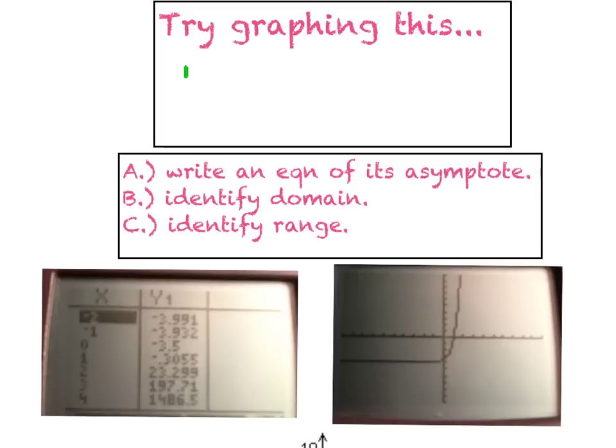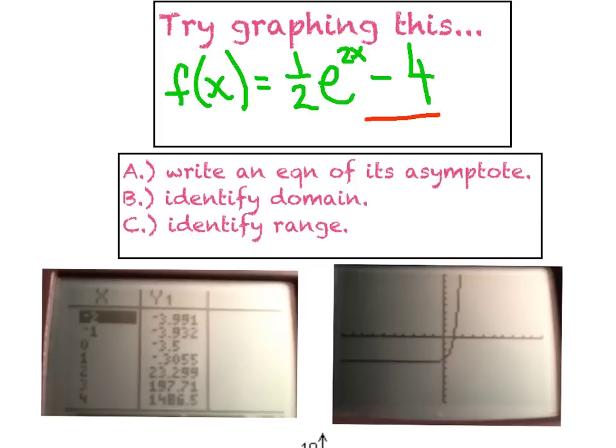We're going to be real brave. We're going to try to graph a wild function: f of x equals one half times e raised to the 2x minus 4. Hopefully you remember from our last lesson that probably the most important thing we do is try to keep track of where that horizontal asymptote goes. Initially, it was right on top of the x-axis. When you see this minus 4 at the end of an equation, that means we shifted everything down 4 units. So we now know that our new asymptote is going to be at y equals negative 4 instead of y equals 0.